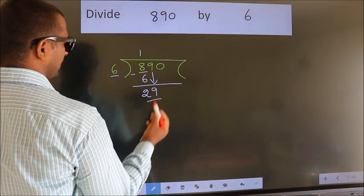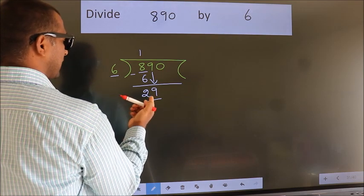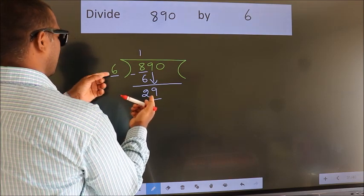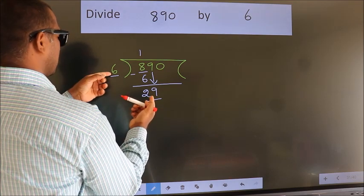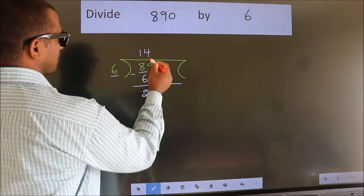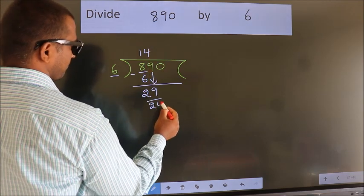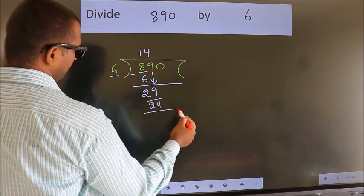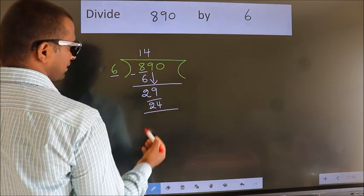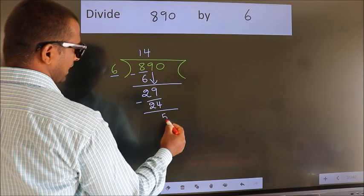So 29. A number close to 29 in the 6 table is 6 × 4 = 24. Now we subtract. We get 5.